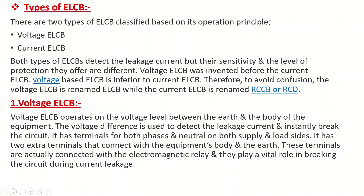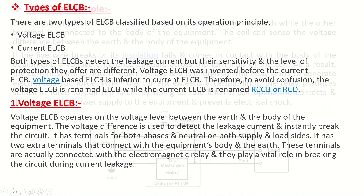Voltage ELCB operates on the voltage level between the earth and the body of the equipment. The voltage difference is used to detect the leakage current and instantly break the circuit. It has terminals for both phase and neutral on both supply and load sides, plus two extra terminals that connect with the equipment's body and the earth. These terminals are connected with an electromagnetic relay and play a vital role in breaking the circuit during current leakage.